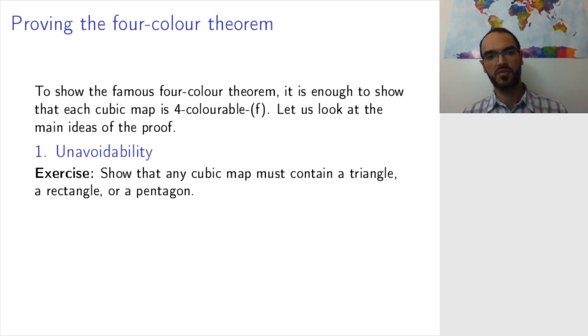So the first notion is the notion of unavoidability. This you can take as an exercise, if you're interested, to show that any cubic map must contain either a triangle or a rectangle or a pentagon somewhere in the graph.